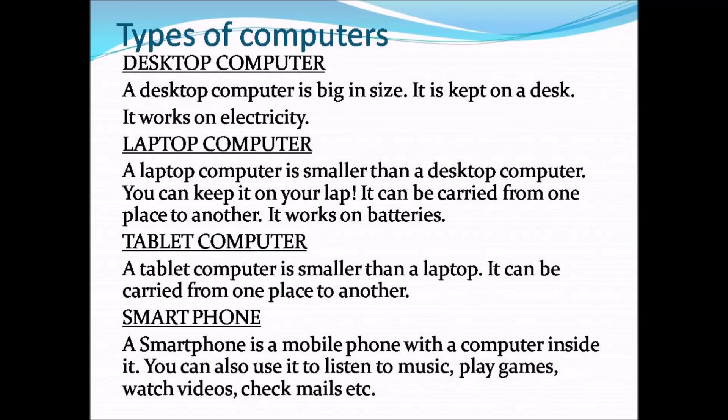Types of computers — we are going to see many different types of computers. The first one is the desktop computer. A desktop computer is big in size, it is kept on your desk, so it is known as a desktop computer, and it works on electricity. The second one is the laptop computer. It is smaller than the desktop computer. We can keep it on your lap, so we call it a laptop computer. It can be carried from one place to another and works on batteries.